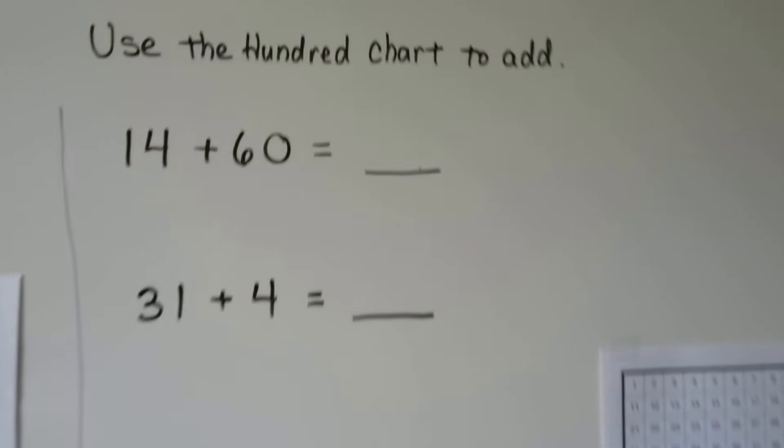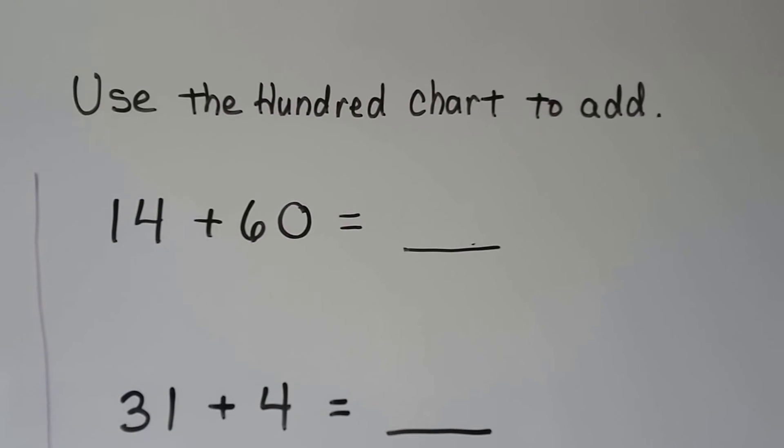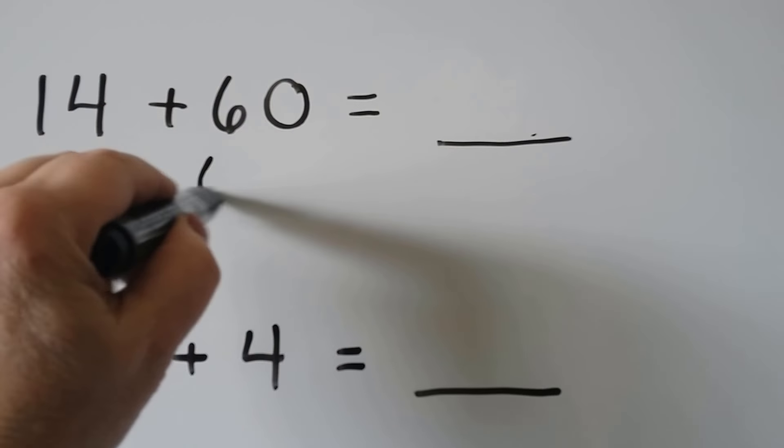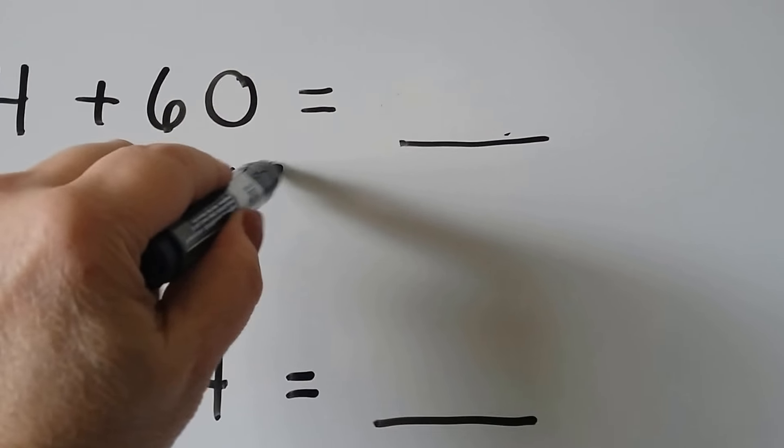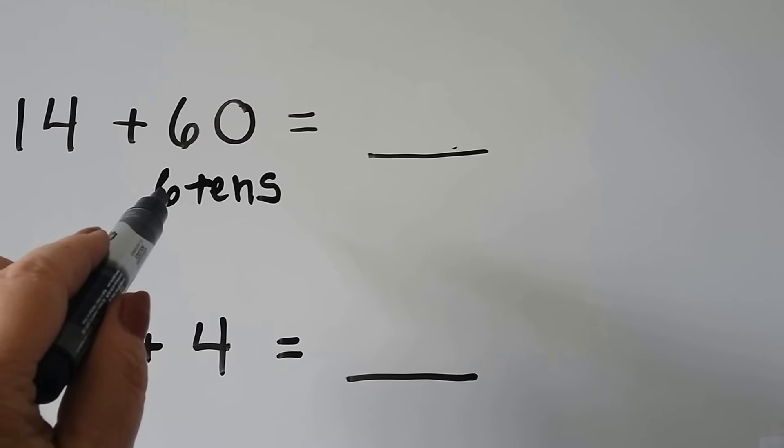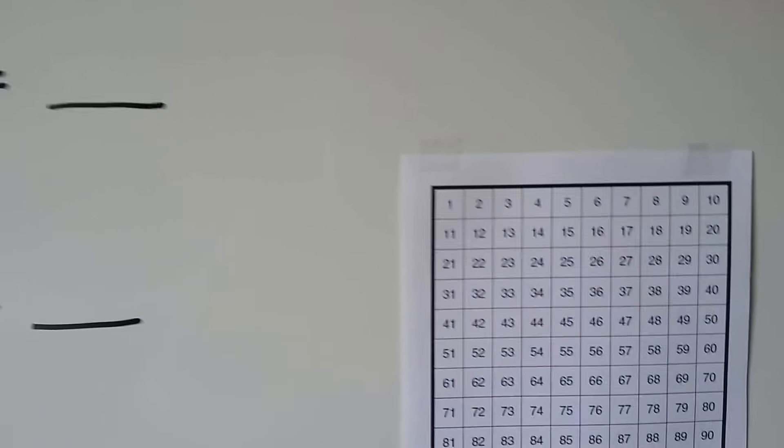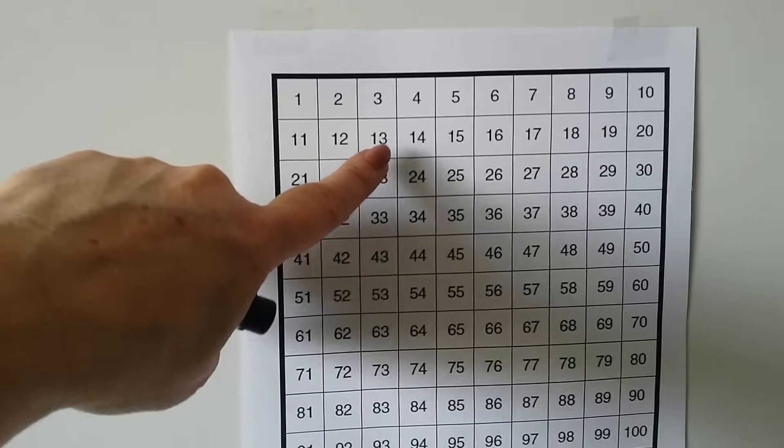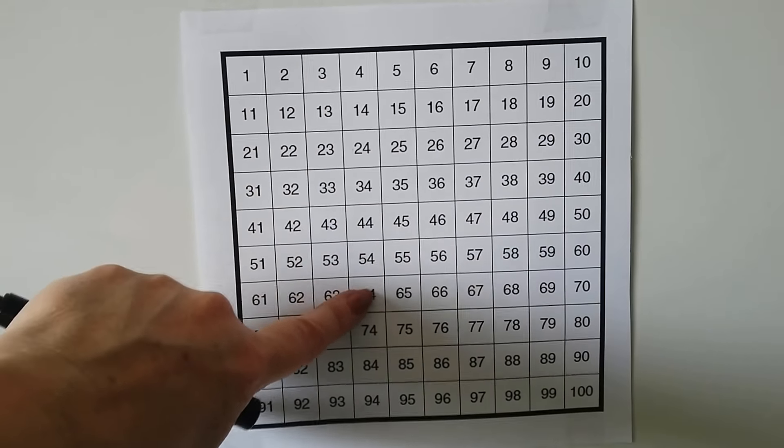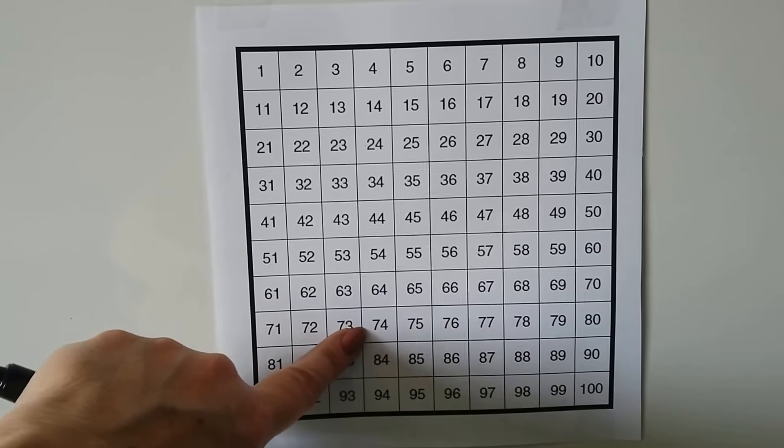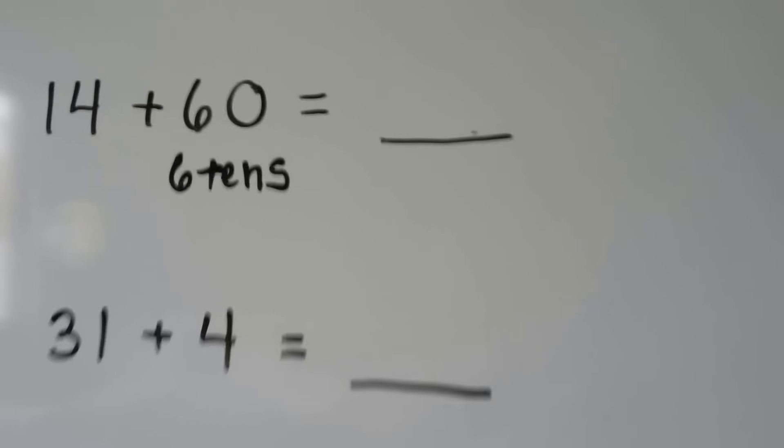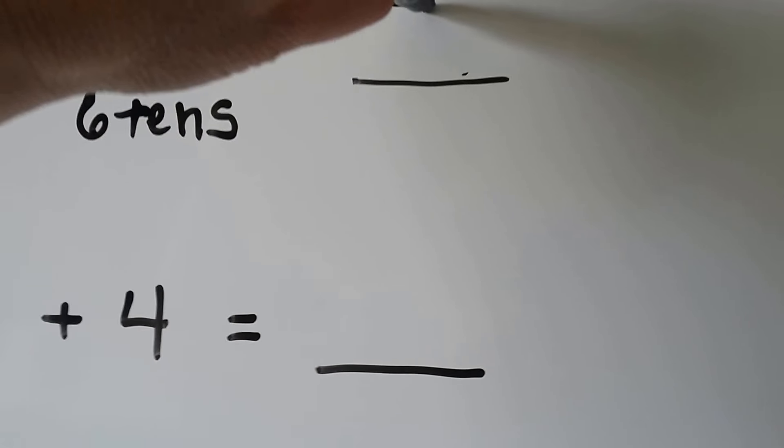We can use the 100 chart to add 14 plus 60. 60 is 6 tens, isn't it? So we're going to start at the 14 and we're going to count down the column 6 tens. We find the 14 and we count down the column 1, 2, 3, 4, 5, 6 tens. We land on 74. 14 plus 60 is equal to 74.